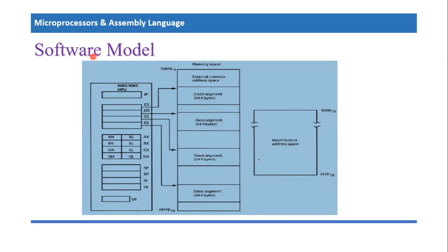The sole purpose of the software model is just to provide an understanding of microprocessor programming to a programmer. All the stuff which a programmer needs to know is basically listed in the software model. So let's focus on this screen and we see there are three different portions available in this specific model.